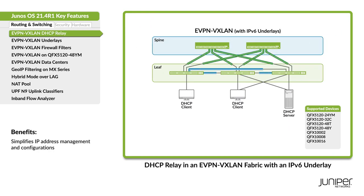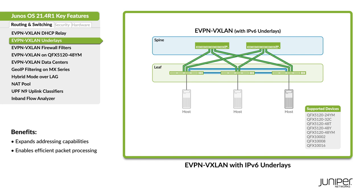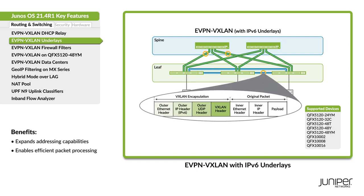Configure a DHCP relay agent on centrally routed and edge routed bridge overlays. Take advantage of IPv6 underlays for VXLAN overlay tunneling in EVPN VXLAN fabrics.